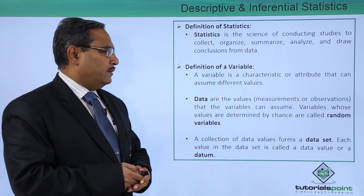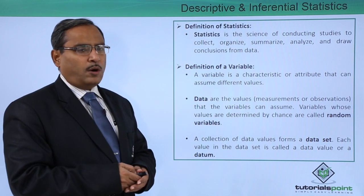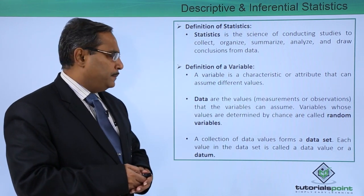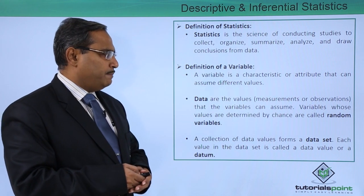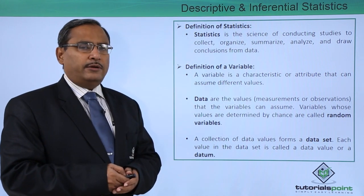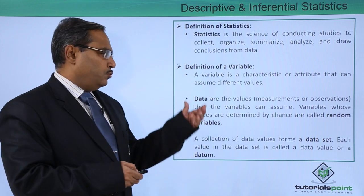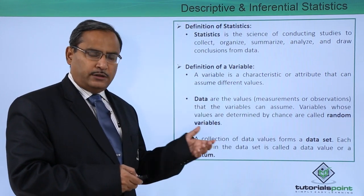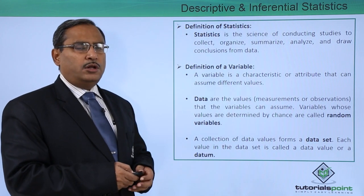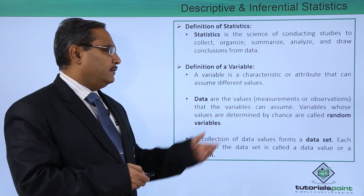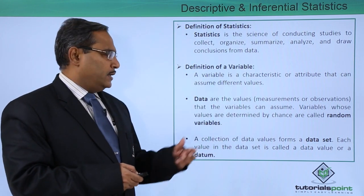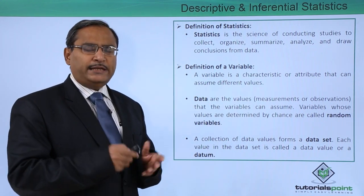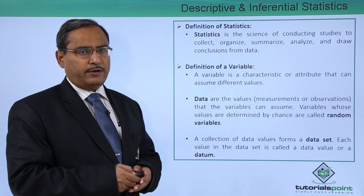Data are the values, measurements, or observations that the variables can assume. Variables whose values are determined by chance are called random variables. Data are values obtained through observation or measurements that the variables can assume.